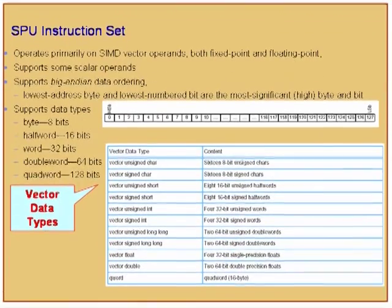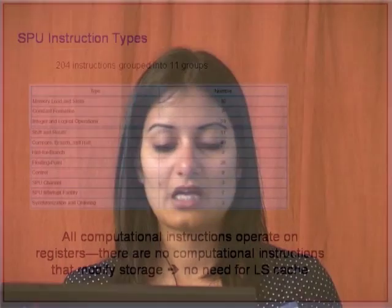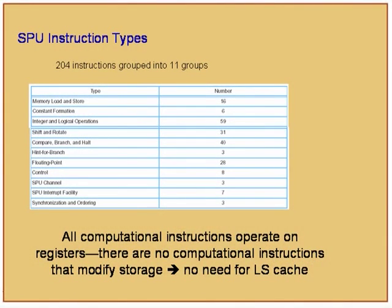All data is big-endian on both the PPU and SPU, which means the MSB is bit 0 and the LSB is bit 127 or 128. The SPU instruction data type names always start with 'vector' followed by the data type. There are about 204 instructions including shift and rotate instructions. There is no rotate right — when you need to rotate right, you give a negative index to rotate left.